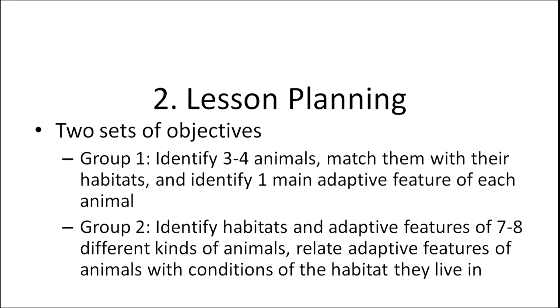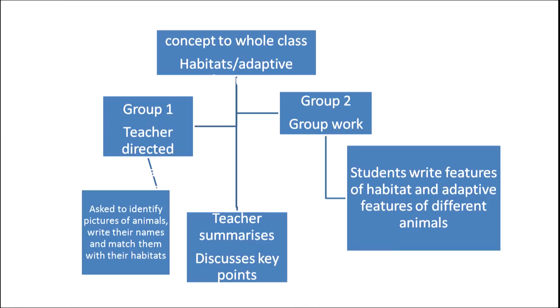For group two — the advanced group — the teacher can plan for students to identify habitats and adaptive features of seven to eight different kinds of animals, and then relate the adaptive features of these animals to the conditions of the habitat they live in. This demonstrates how two different objectives can be planned for the same classroom depending on the group level.